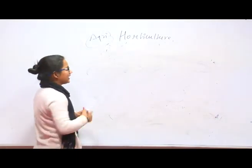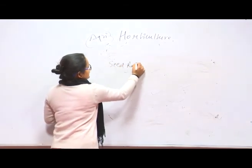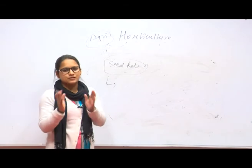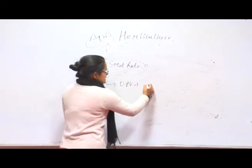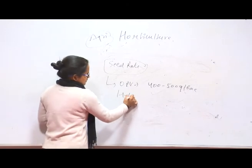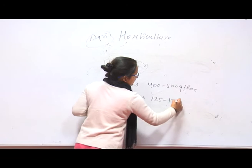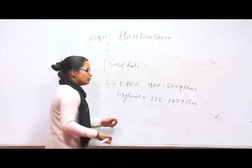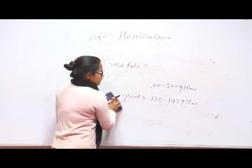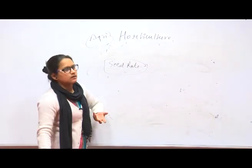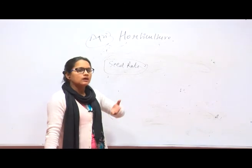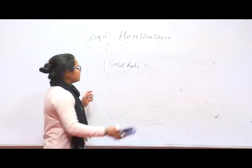Now coming to seed rate. In case of tomato, the seed rate for open pollinated varieties is 400 to 500 grams per hectare. For hybrids, the seed rate is less — 125 to 175 grams per hectare, meaning 125 to 170 grams of seed is enough for one hectare. As it is a warm season crop, you can propagate the crop in June to July, and also in September to October.